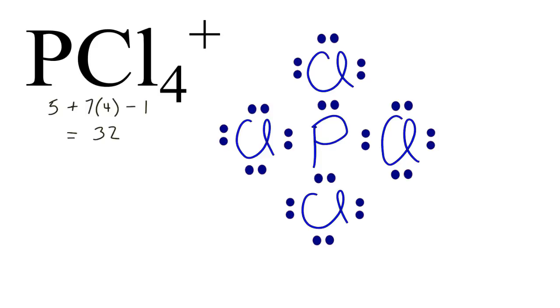And each atom has an octet. All of the chlorines have eight valence electrons, and that central phosphorus, it also has eight valence electrons. So we're done with the Lewis structure for PCl4 plus.